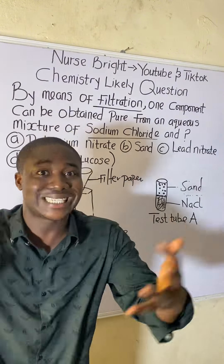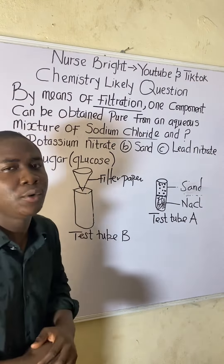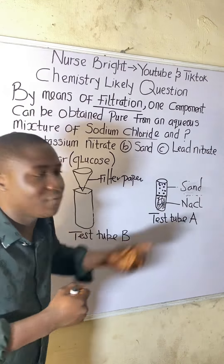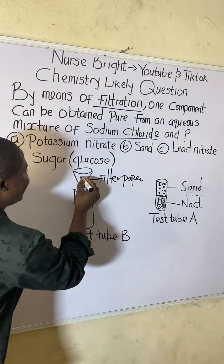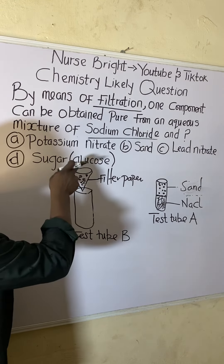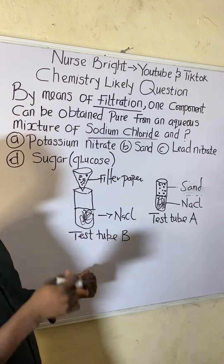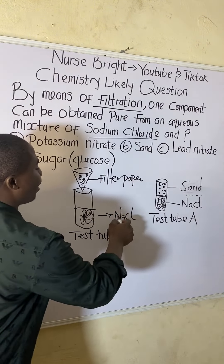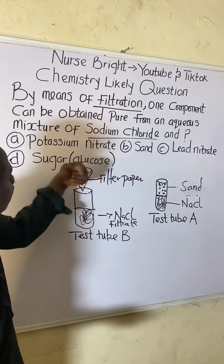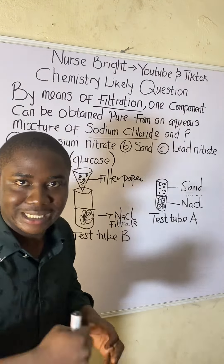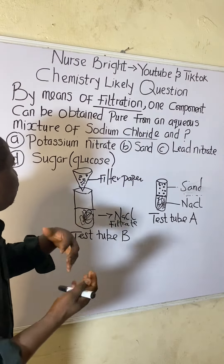Since filtration works on differences in sizes, sand cannot pass through the filter paper — it will not dissolve in sodium chloride. When the mixture is poured through the filter paper, the sand is retained in the filter paper while the sodium chloride solution passes through. The substance that passes through is called the filtrate; the substance retained is called the residue.